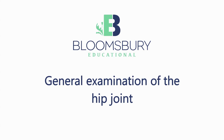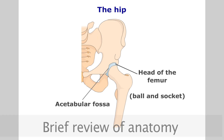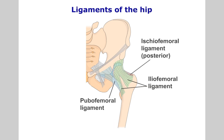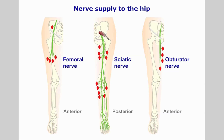The hip joint is made up of the acetabular fossa and the head of the femur. It is a synovial ball and socket joint made deeper and more congruent by a fibroligamentous labrum. The hip derives strong support from the iliofemoral, pubofemoral and ischiofemoral ligaments. The hip is innervated by the femoral, sciatic and obturator nerves.